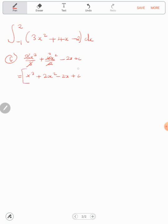And minus two x here plus c. So what we need is we do this, we put our two there and negative one there. So we're just finding the difference between the two. So we have two to the power three plus two times two squared minus two times two, like that.